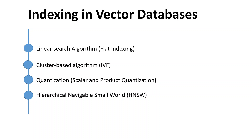The third technique is called scalar and product quantization, or simply quantization. The quantization technique involves reducing the memory footprint of large embeddings by reducing their precision. There is 16-bit, 8-bit, 4-bit, and many other techniques within quantization. There is a separate video discussing quantization in detail, especially in the context of LoRA and QLoRA.